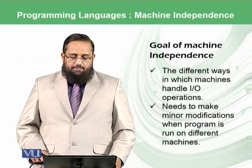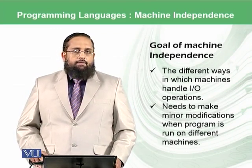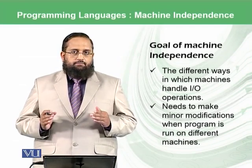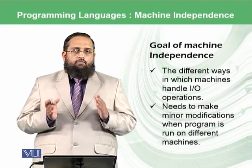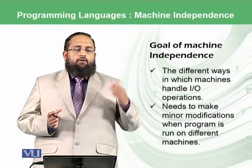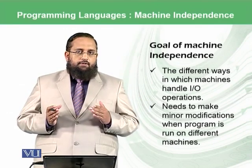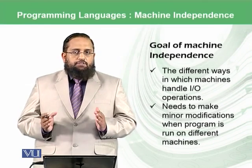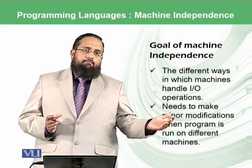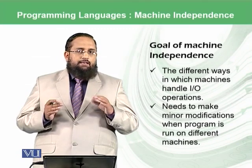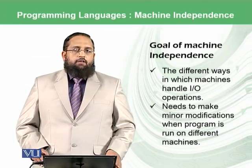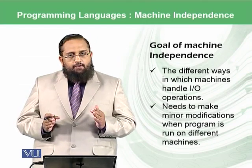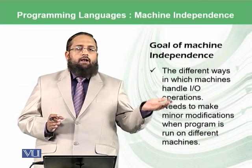However, the goal of machine independence — whether it was achieved or not — let's dig into it a little more. One issue is the different ways in which machines handle I/O instructions. For example, you have a printer installed on one machine and another printer on another machine. There might be a difference in how that printer is accessed by instructions executed on machine A versus machine B, meaning you need small modifications to the program compiled for machine A if you want to execute it on machine B.